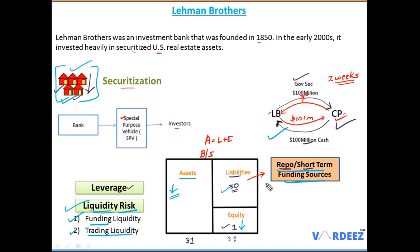With this business model, Lehman Brothers was forced to file for bankruptcy because they no longer had equity, their assets were falling in value, and they couldn't pay off the liabilities. Hopefully you now have a clear idea as to why Lehman Brothers was forced to file for bankruptcy. In the next video we'll be talking about the LTCM and MGRM case studies, so make sure you subscribe to our YouTube channel. Thank you so much for your time and have a great day ahead.